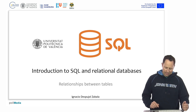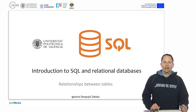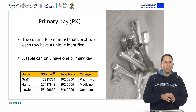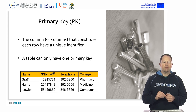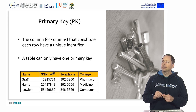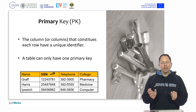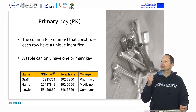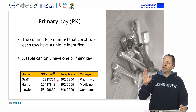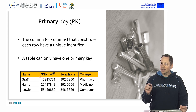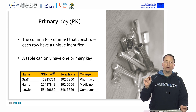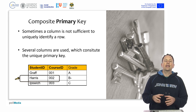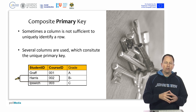Let's see how relationships between tables are defined in relational databases. They are based on having two keys: a primary key and a foreign key. The primary key, PK, is a column or group of columns — because it can be composed — which makes each row have a unique identifier. A table can only have one primary key. Notice that the social security number column is unique; the name or phone number can be repeated, but the social security number is not.